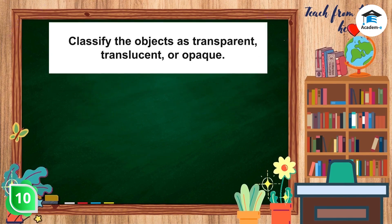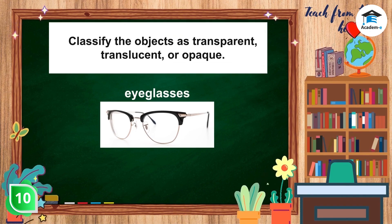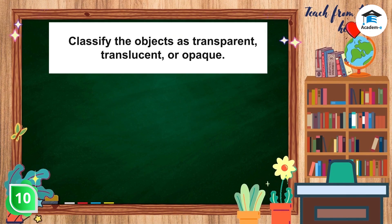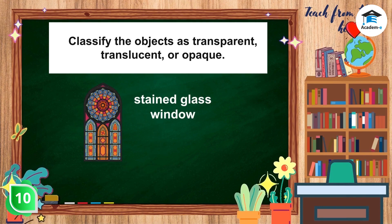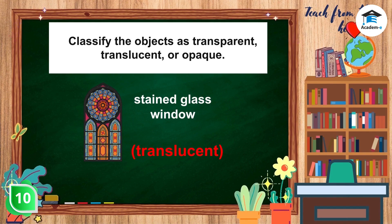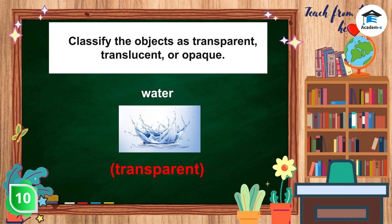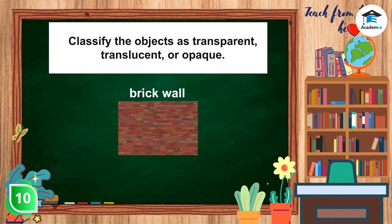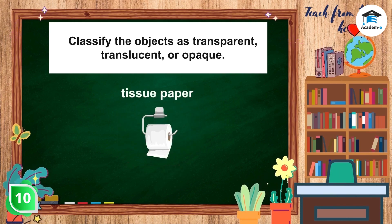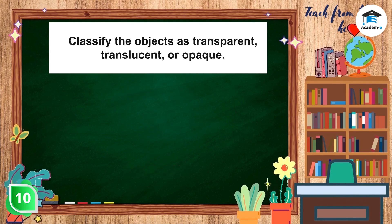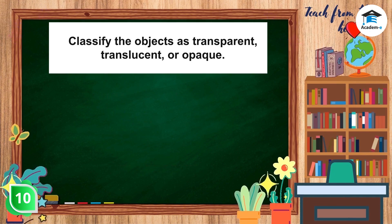Now try this. Classify the objects as transparent, translucent, or opaque. Eyeglasses. Wooden table. Stained glass window. Water. Brick wall. Tissue paper. Magnifying glass. Frosted glass window.